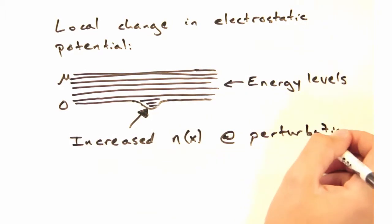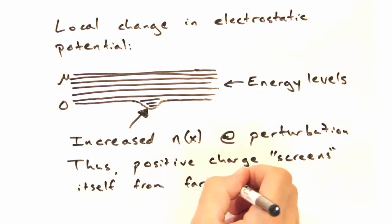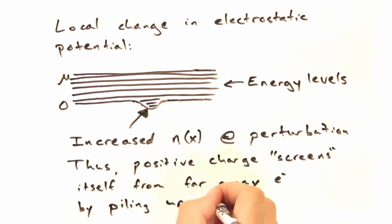At the perturbation, there's increased local charge density, n. Thus, the positive charge screens itself from far away electrons by piling up charge nearby.